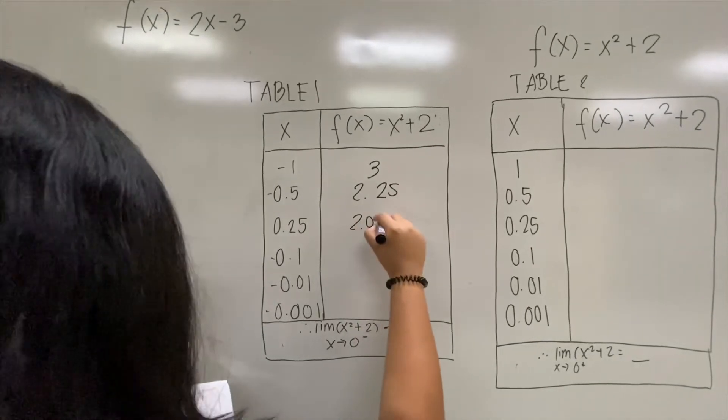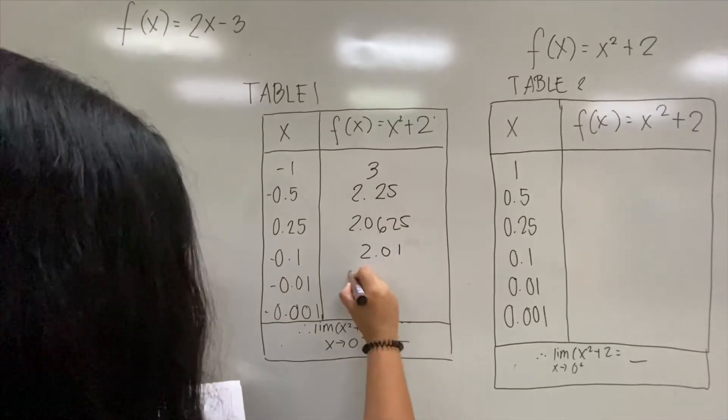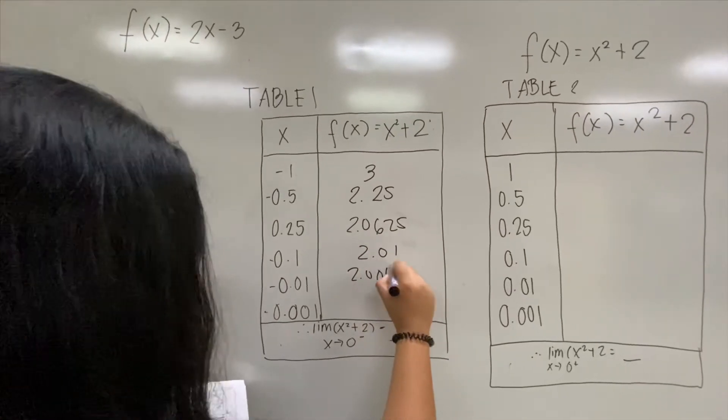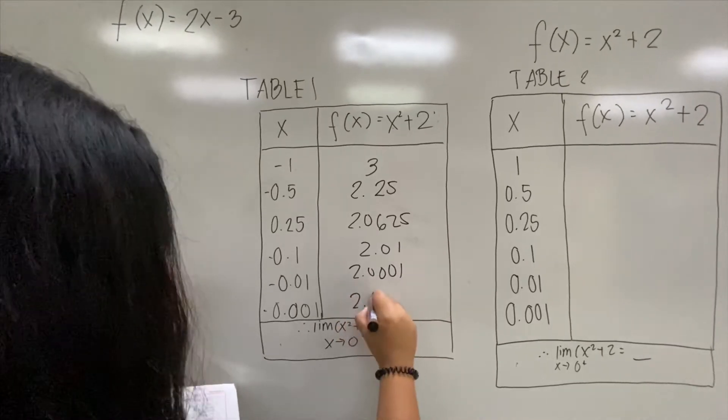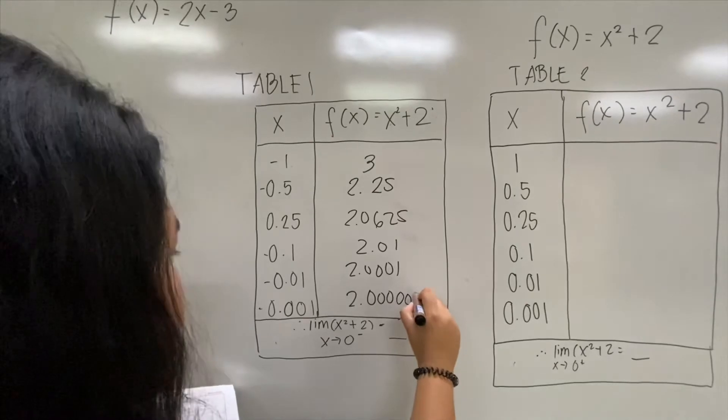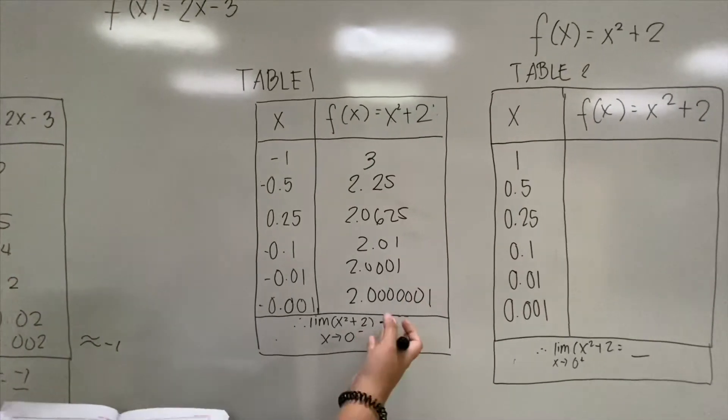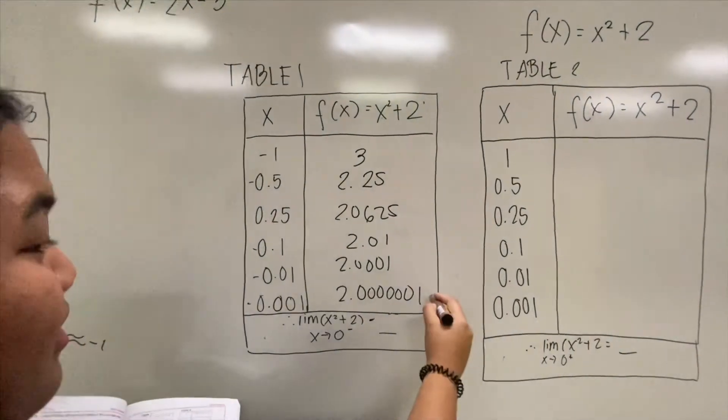2.0625, 2.01, 2.0001, and 2.00001. Notice that the values go to 2.